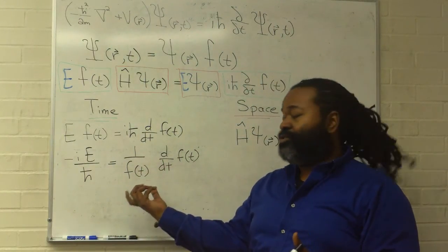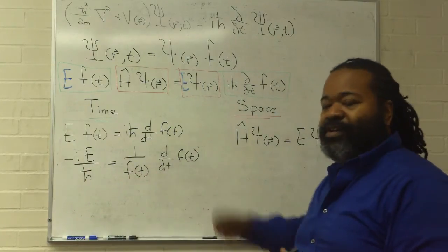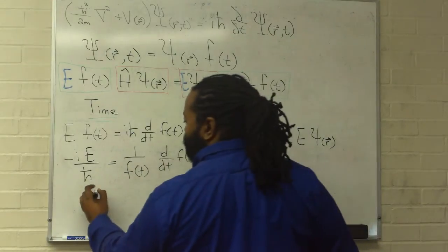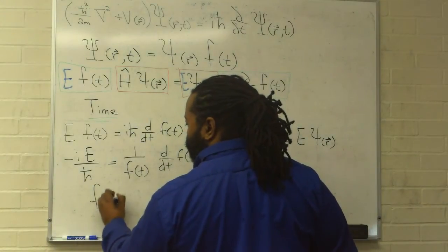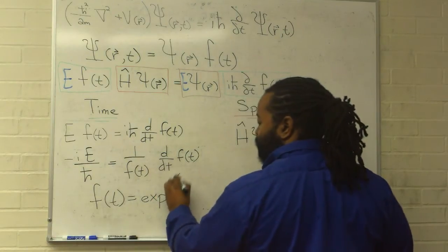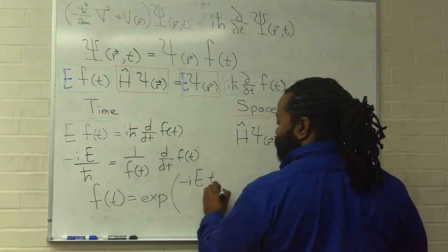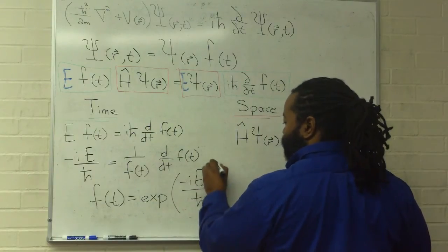This construction will allow us to have a natural log, and after doing some basic calculus followed by a little bit more algebra, we get the final form of the time solution. That function is an exponential minus iE over h-bar.